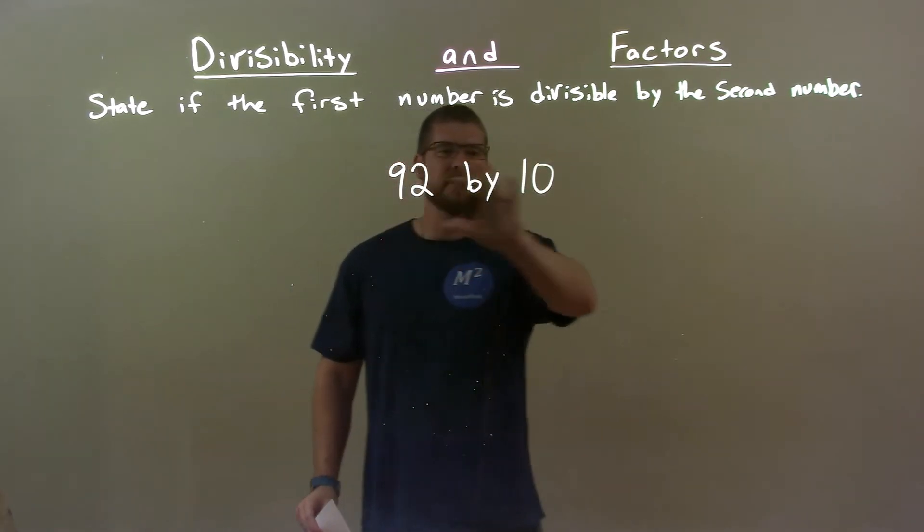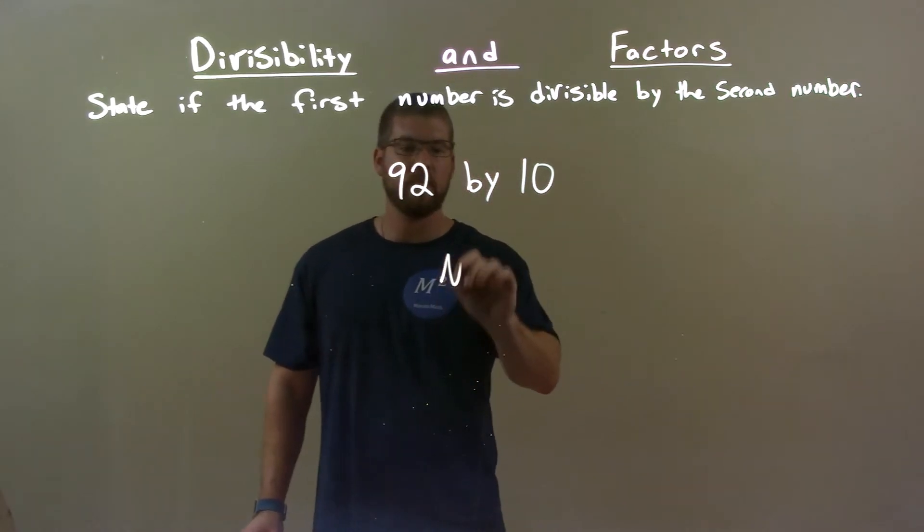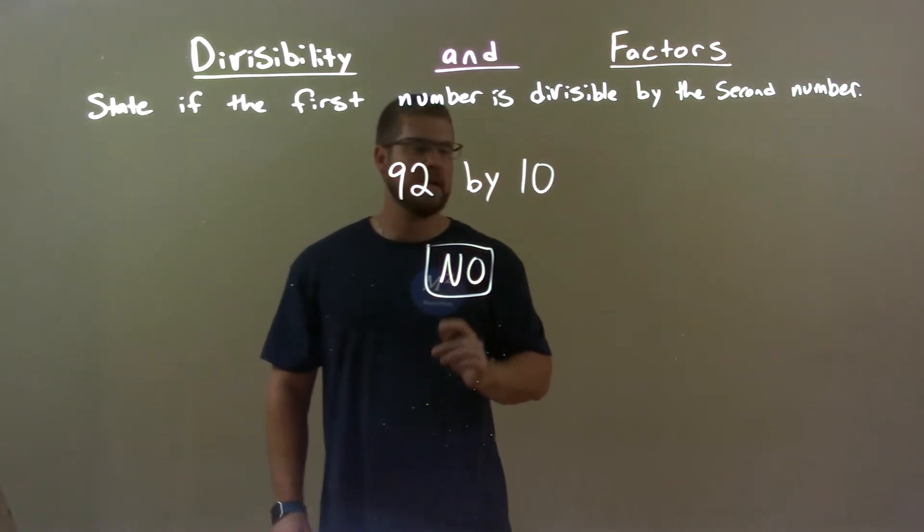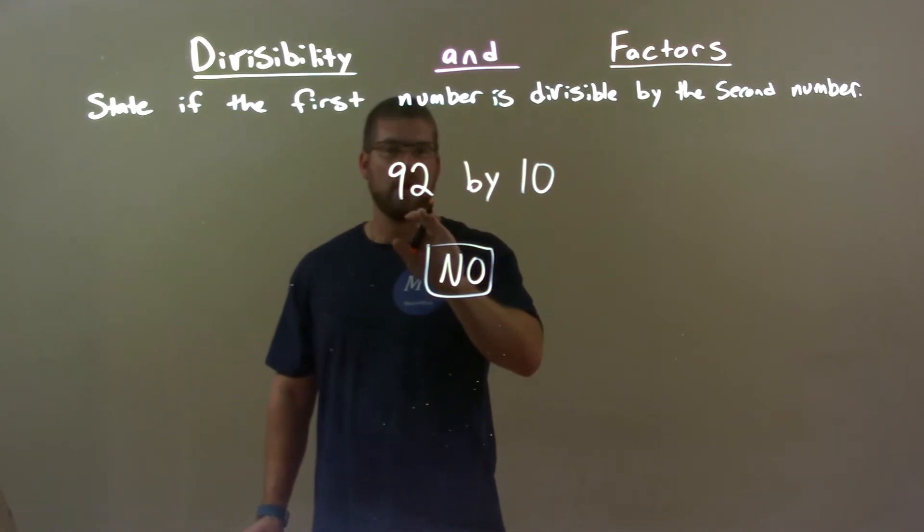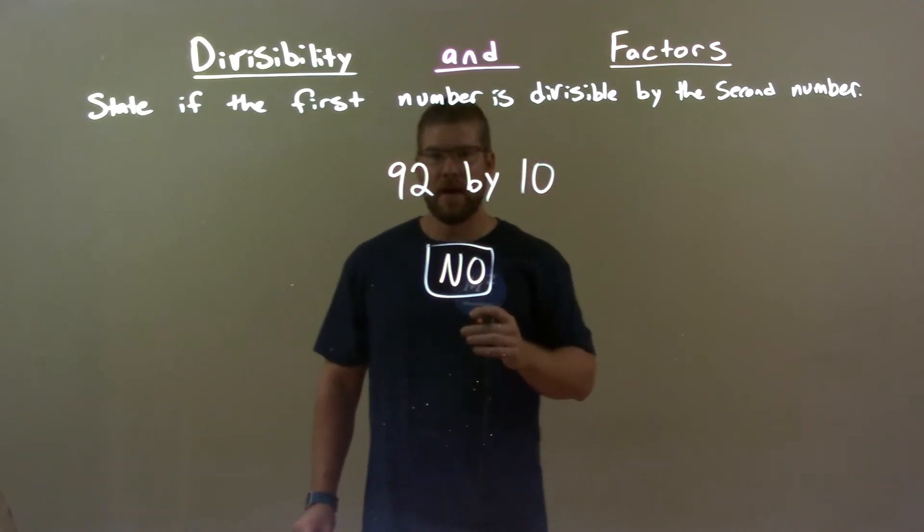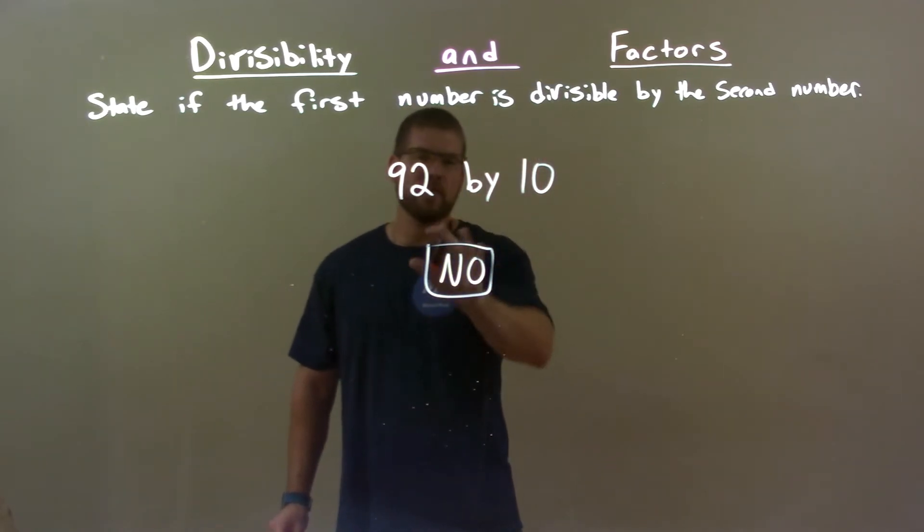Well, first thing I can see this easily and say no. The reason is 92 doesn't end in a zero, right? All numbers that end in zero are divisible by 10. So that's the quick answer, no.